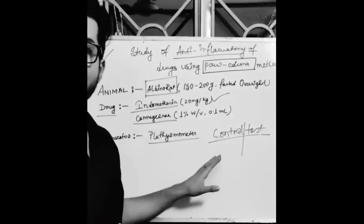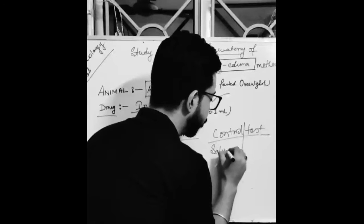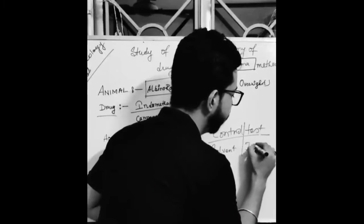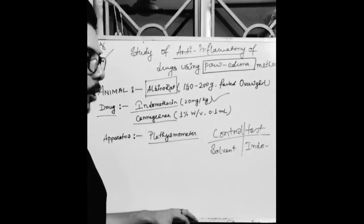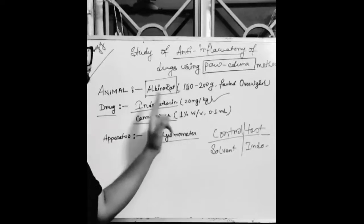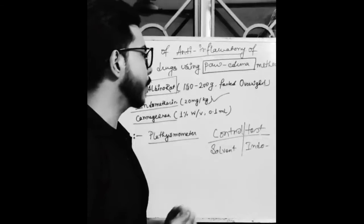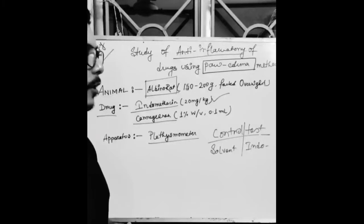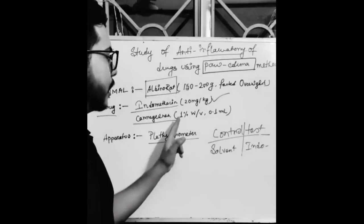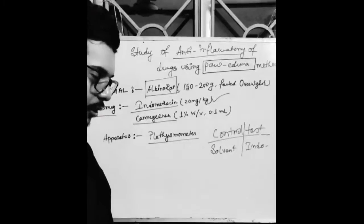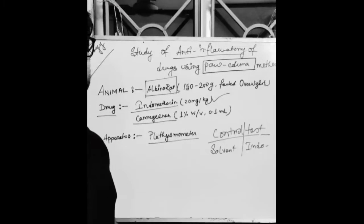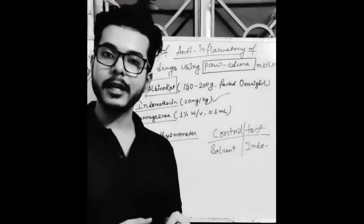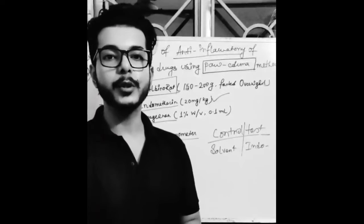Control means it will only be given the solvent — the solvent in which indomethacin is dissolved. Test means indomethacin — the drug — will be given. What will be the concentration? Indomethacin will be given as per the body weight of the rat: 20 mg per kg. And carrageenan concentration will be the same for all rats: 1% w/v — that is one drop of carrageenan in 100 ml of solvent — and 0.1 ml will be given by parenteral route.